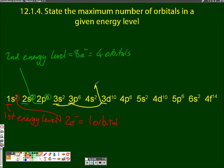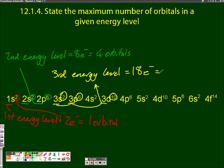For the third energy level, there's an s, p, and d numbers to consider. And so when you add up two, six, and ten, you get 18 electrons. Two electrons per orbital gives you nine orbitals.